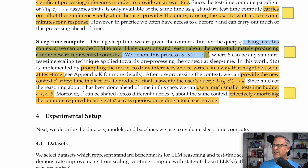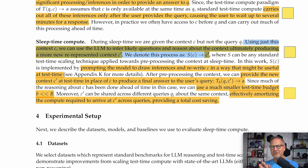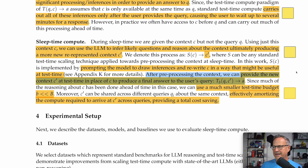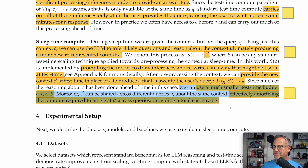Their methodology: using context C, they use the large language model to infer likely questions and reason about the context, ultimately producing a new represented context C prime — the original context plus potential answers to questions. C prime is the context fed in at test time instead of the original context. After pre-processing, they provide C prime at test time to produce a final answer, and they can use a much smaller test time budget. Moreover, C prime can be shared across different queries about the same context, effectively amortizing the compute required and providing a total cost savings.